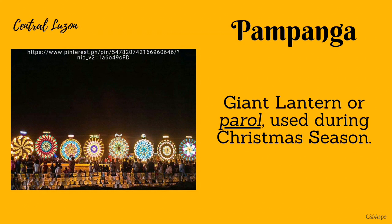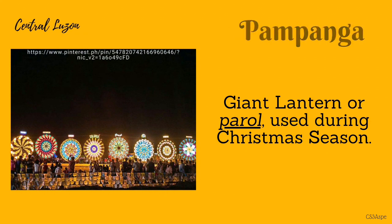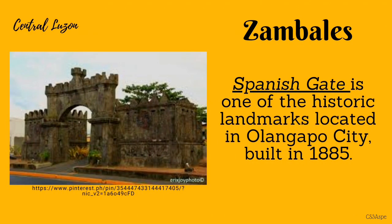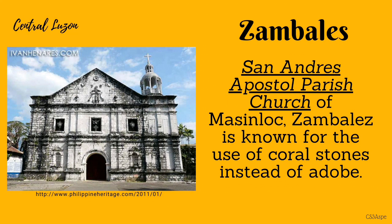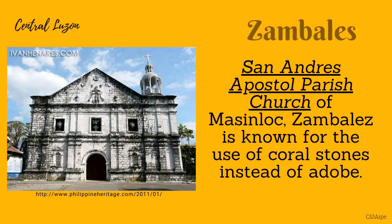San Fernando, Pampanga is known for its giant lanterns or parol, with dancing lights in several shades and colors that form intricate geometric patterns. Spanish Gate is one of the historic landmarks located in Olongapo City, Zambales, built in 1885. Aside from being used as an entrance and exit to the naval station, it was also used as a jail during the Spanish and American occupation. The San Andreas Apostolic Church of Zambales is known for the use of coral stone instead of adobe, founded by the Augustinian Recollects in 1607. Its belfry is composed of circular columns topped by a lantern and a cross.